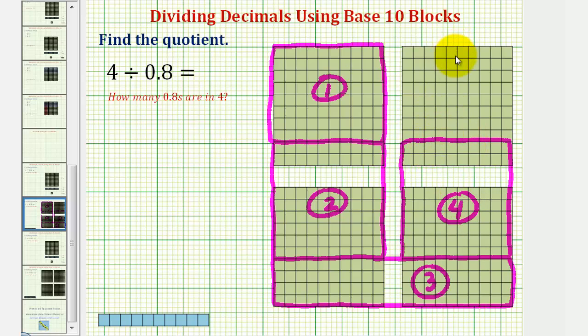Notice how we have exactly eight longs left. So we have a fifth copy of eight longs, or a fifth copy of eight-tenths in four.